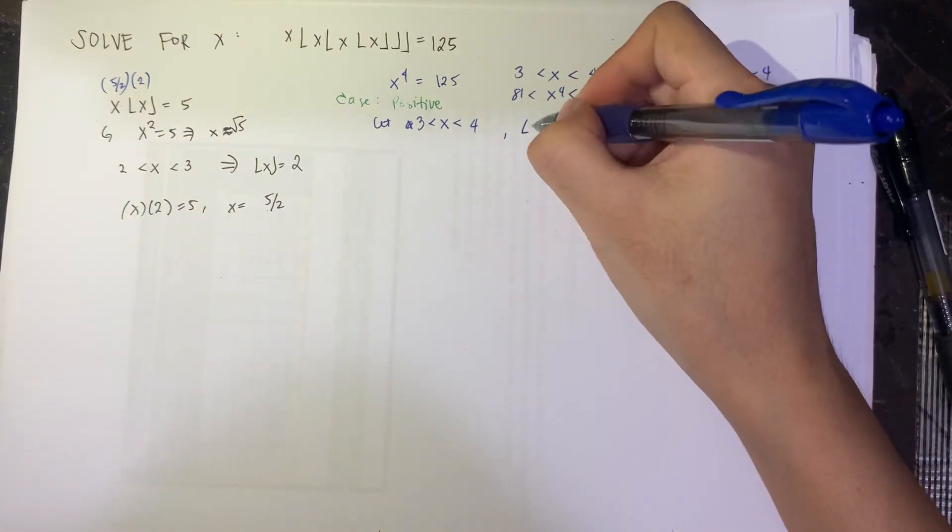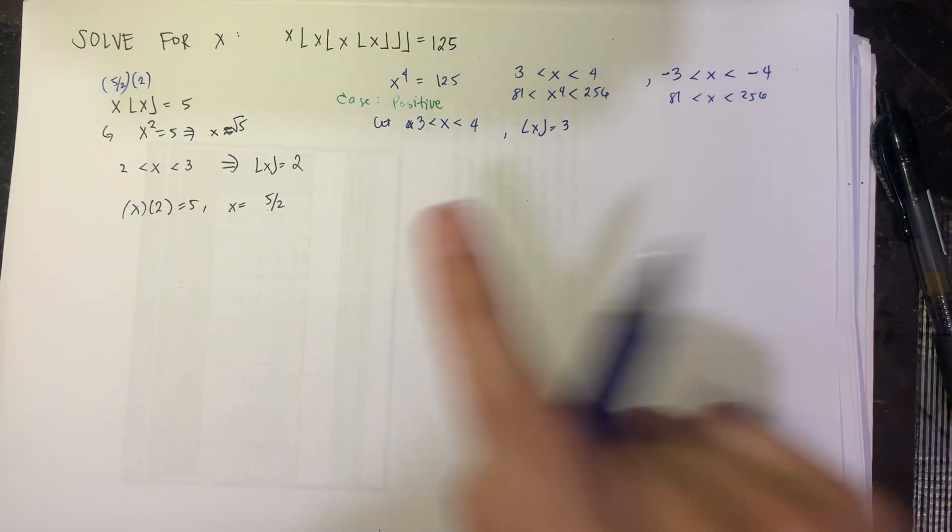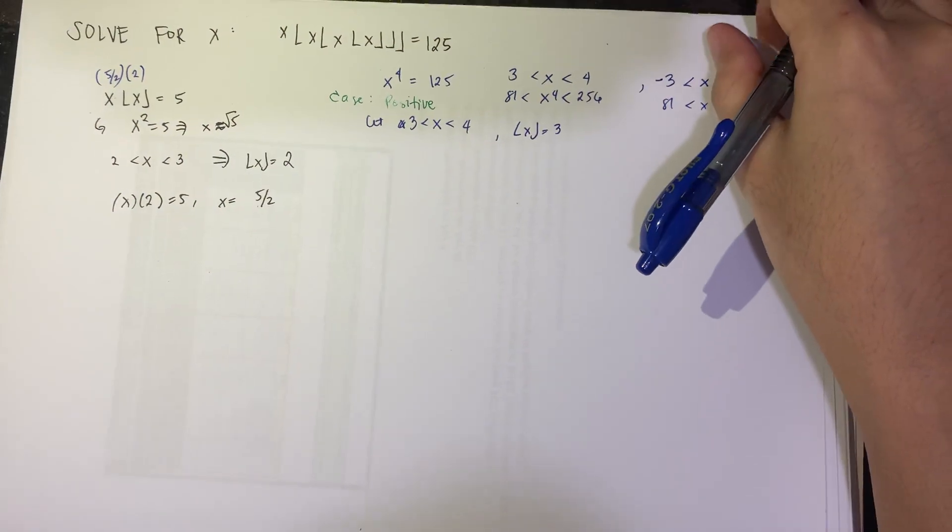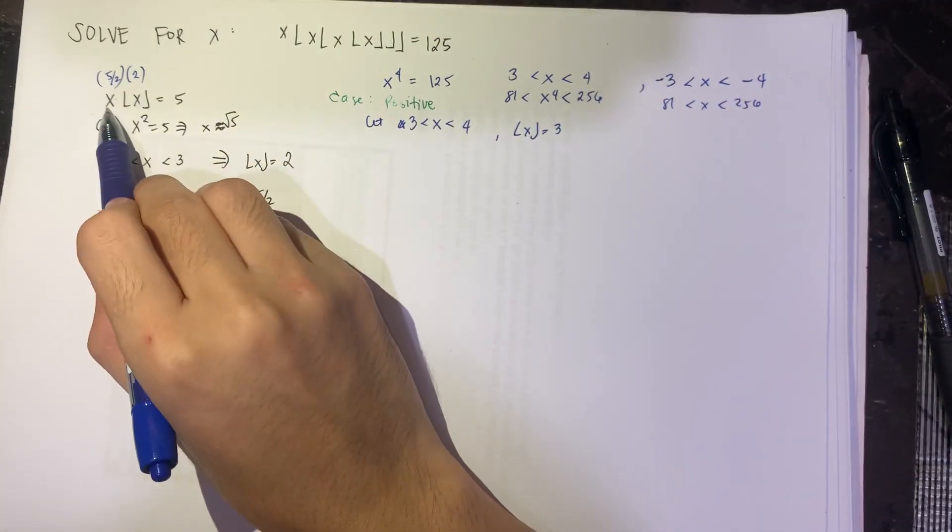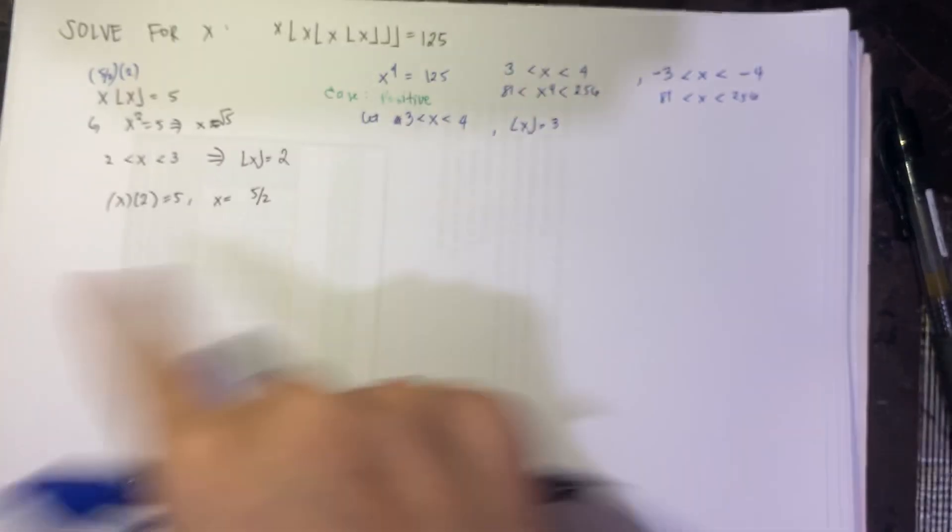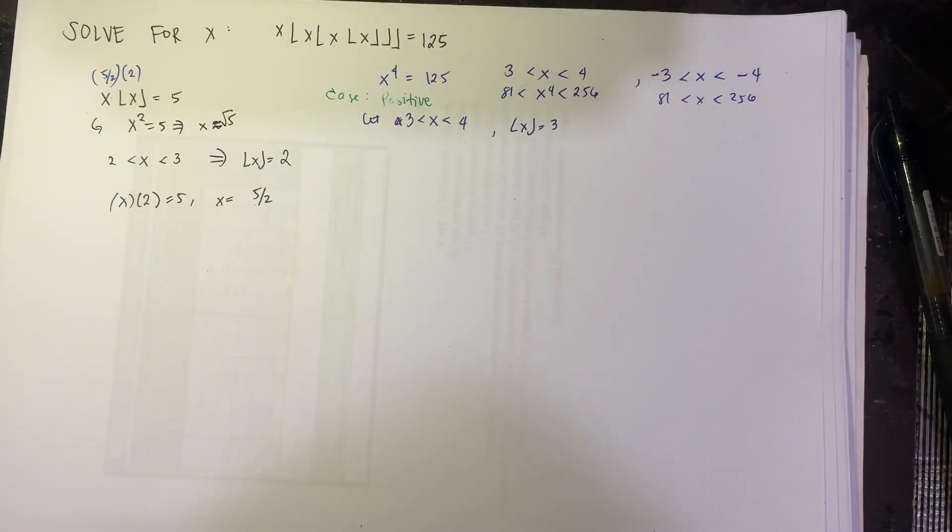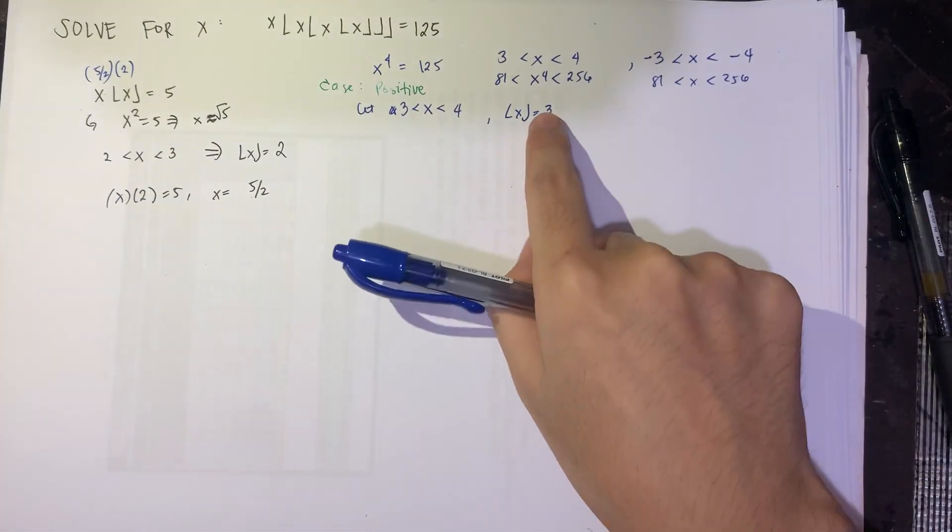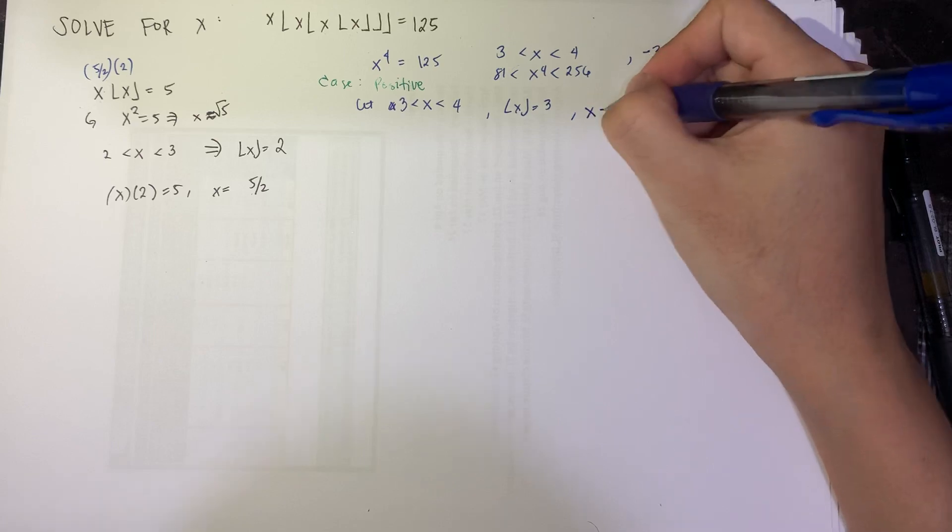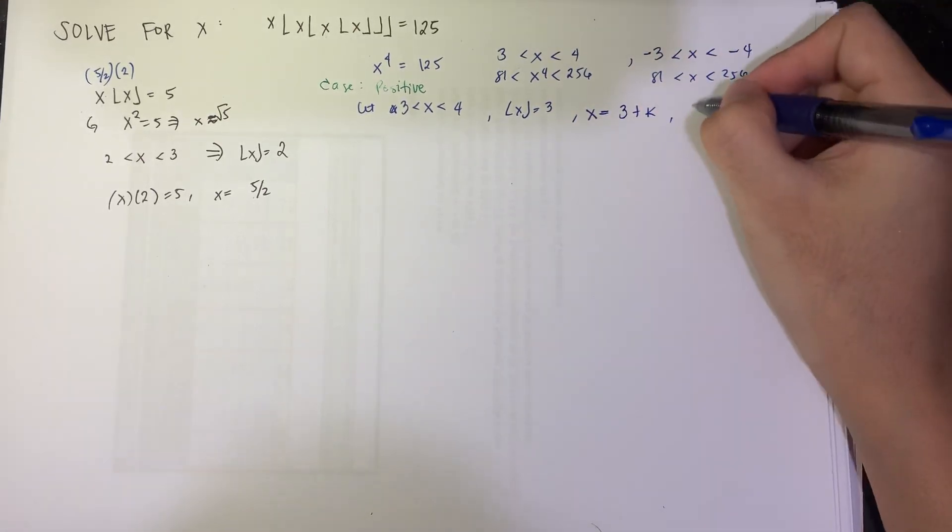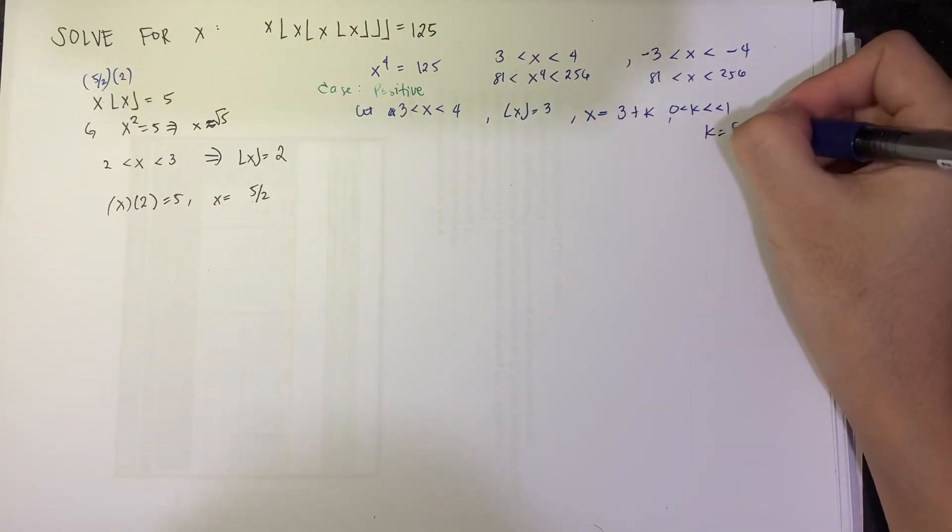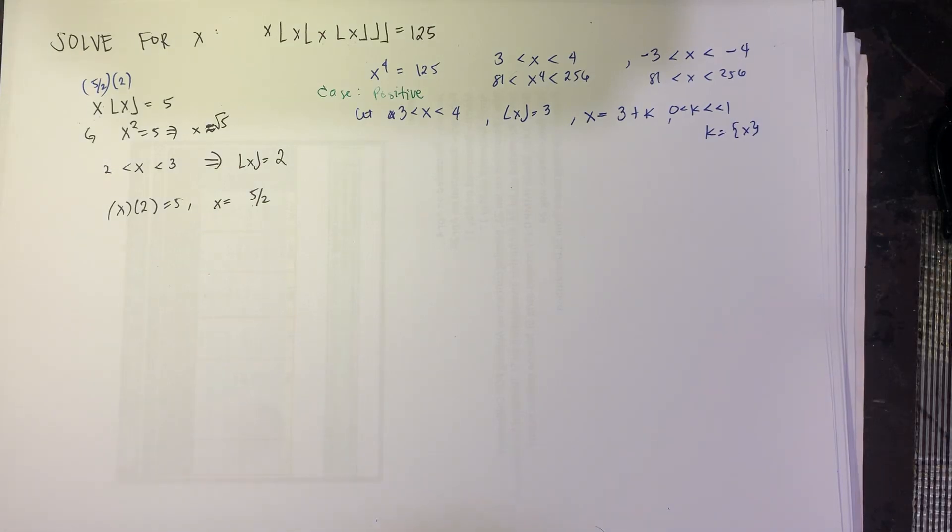So this means that the floor of x is equal to 3. And to solve this nested radical, we do it one layer at a time. That's why for this one, we started with this floor and then multiplied with this one. For this one, we start with this innermost and then multiply it with this one and then work our way outside. For this one, since x is between 3 and 4, then floor of x is equal to 3 and furthermore, x is equal to 3 plus k, where k is a real number between 0 and 1. So in other words, k is your fractional part of x.